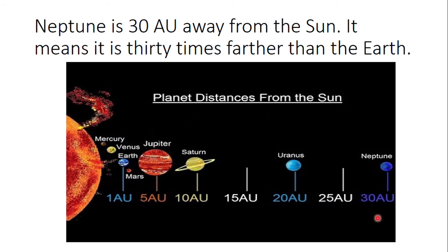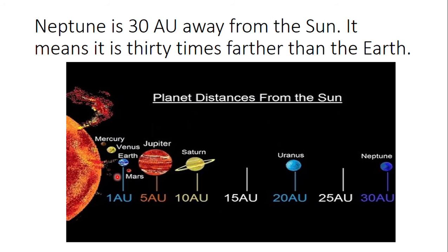Similarly, if Neptune is 30 astronomical units away from the sun, that means Neptune is 30 times farther than the earth. So, we give a reference of 1 AU, which is the approximate distance between the earth and the sun.